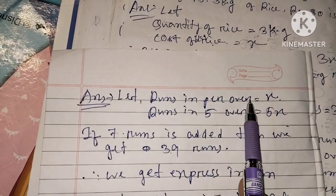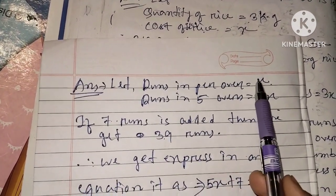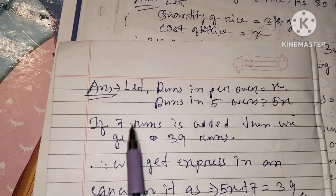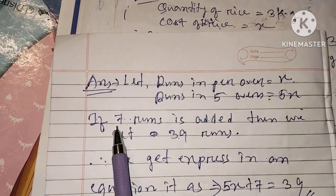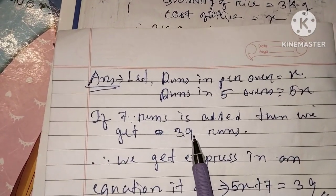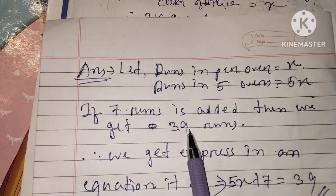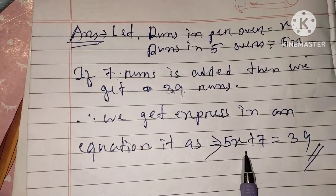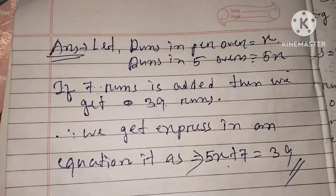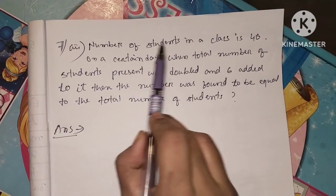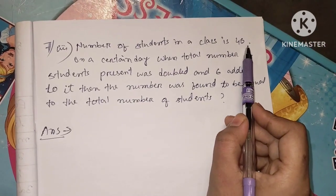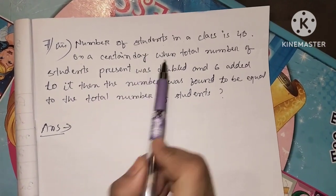We need to find x. So x — 5x. We hold our answer. Okay, the next member: the number of students in a class.